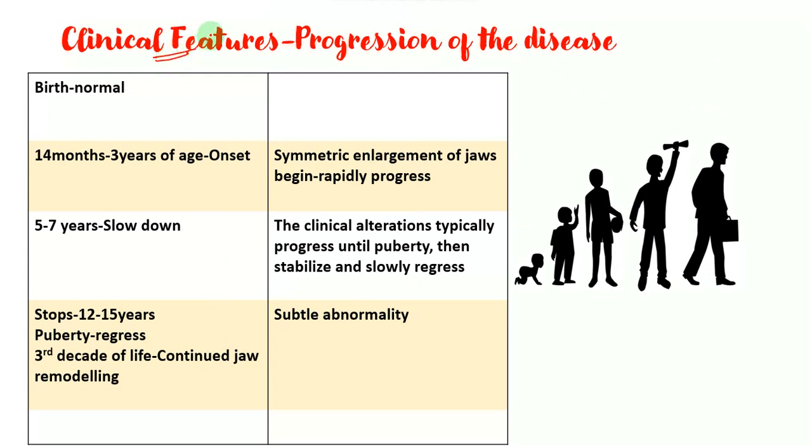The important part here are the clinical features which is the progression of the disease. As I told you in the first slide itself, this disease has a tendency for spontaneous remission. So you could see that at birth, the child is normal. But as there is growth occurring, within 14 months to 3 years of age, the disease has an onset. So here you would see symptoms like symmetrical enlargement of the jaws at 3 years. Now by the time the child is 5 to 7 years, there is rapid progression. And this is where you see the full-day features. But around this age, it begins to slow down. So it begins to slow down, and by 12 to 15 years of age, the growth of it stops. By puberty it begins to regress.